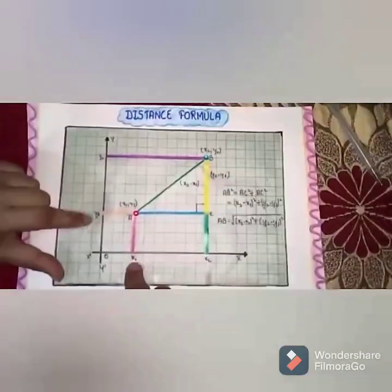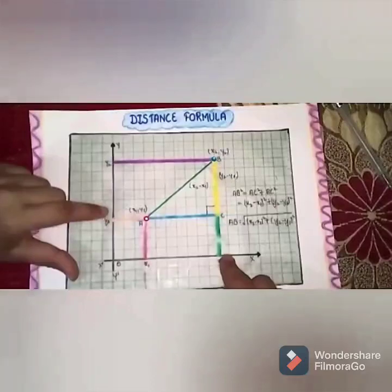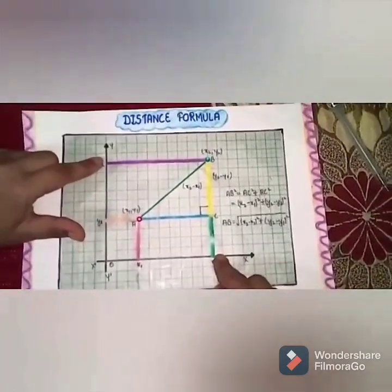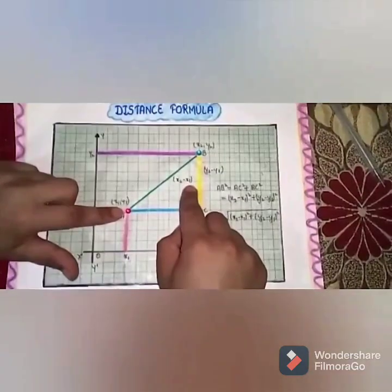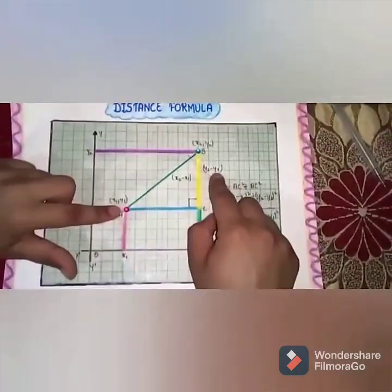Suppose X1, Y1 and X2, Y2 be the points and the distance between them is X2 minus X1 and Y2 minus Y1.